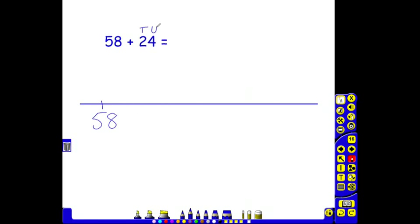They could add this in a whole 20 or in two individual 10s. Looking at the easier option, 58 add 10 is 68. 68 add another 10 is 78.